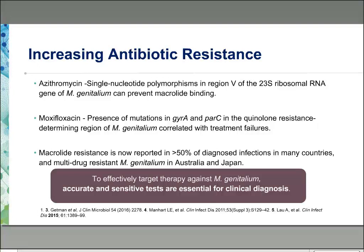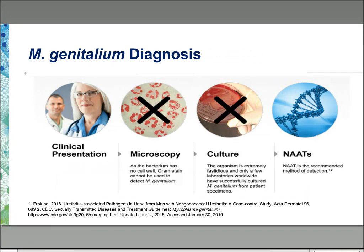The most important thing is to think about how to target therapy. We now have accurate and sensitive tests that are essential for clinical diagnosis. Microscopy will not work because the bacteria has no cell wall and Gram stain cannot be used. Culture doesn't work well because it is extremely difficult to perform, and only a few laboratories worldwide have successfully cultured MGEN from patient specimens.